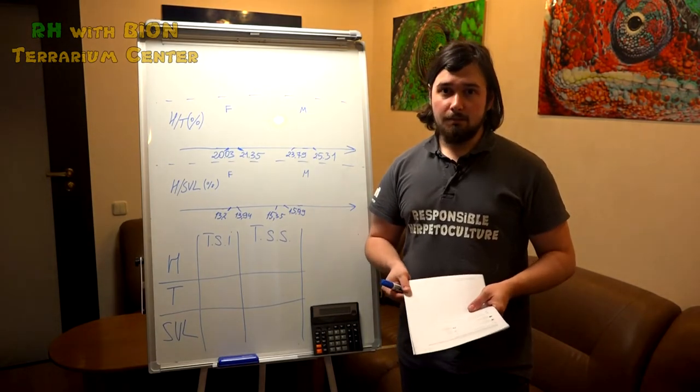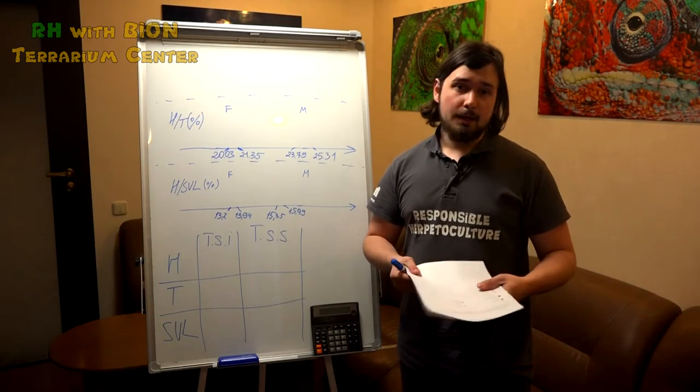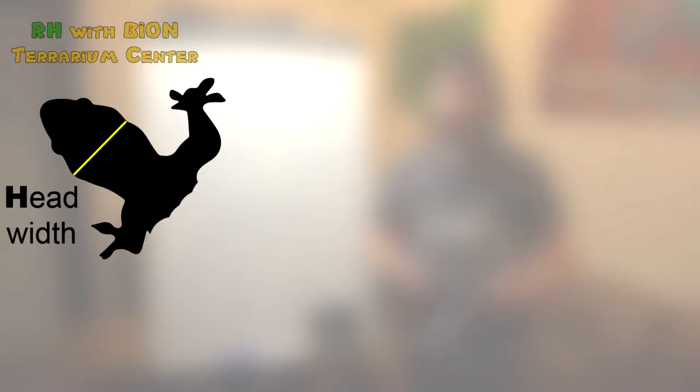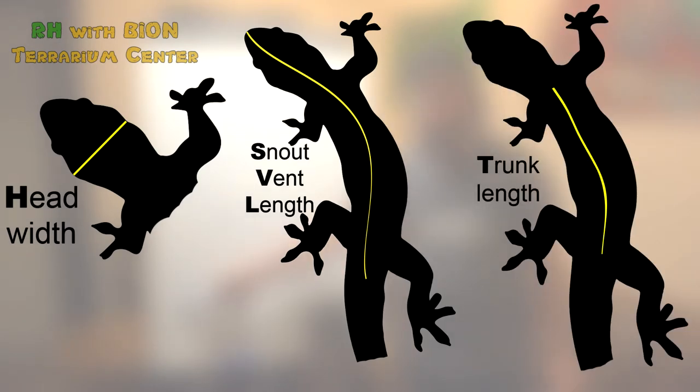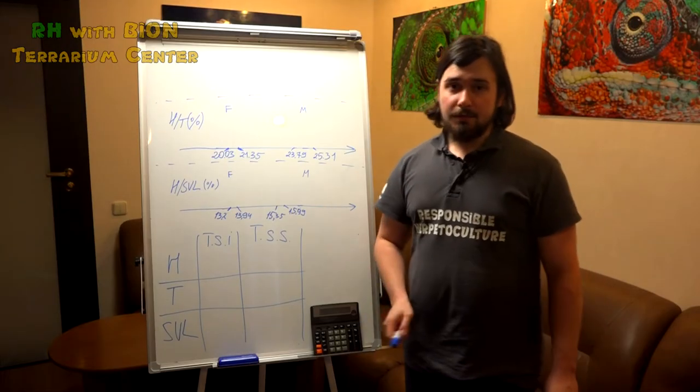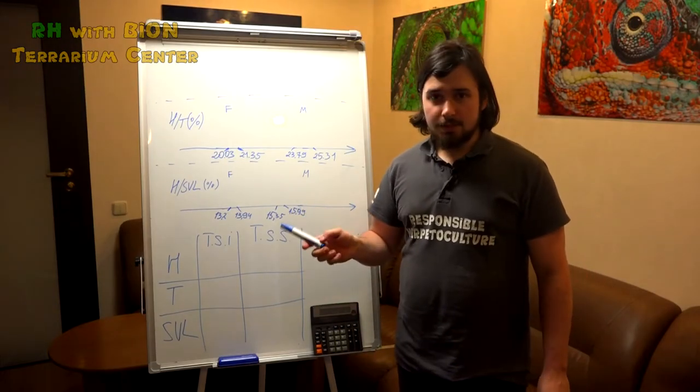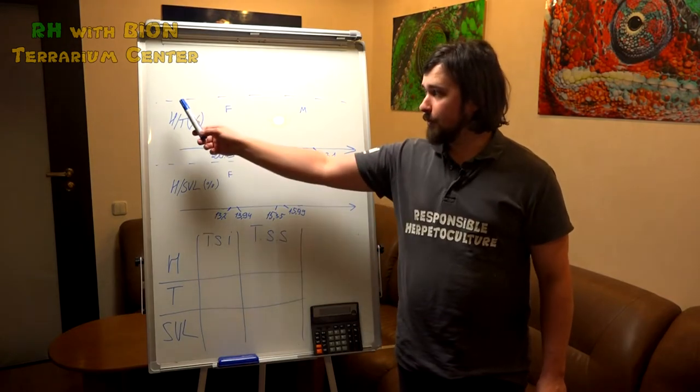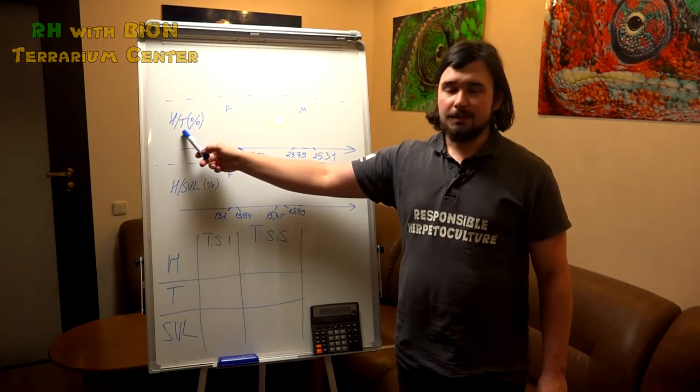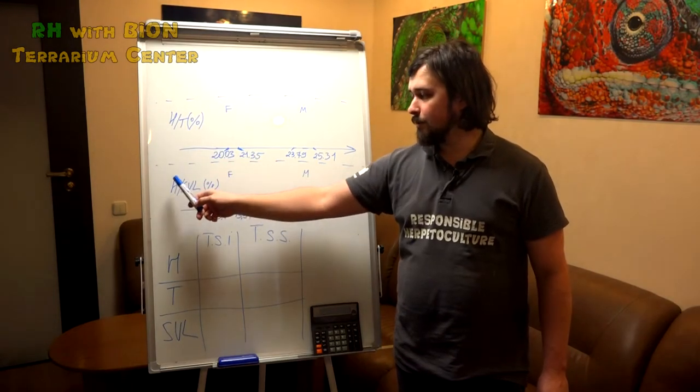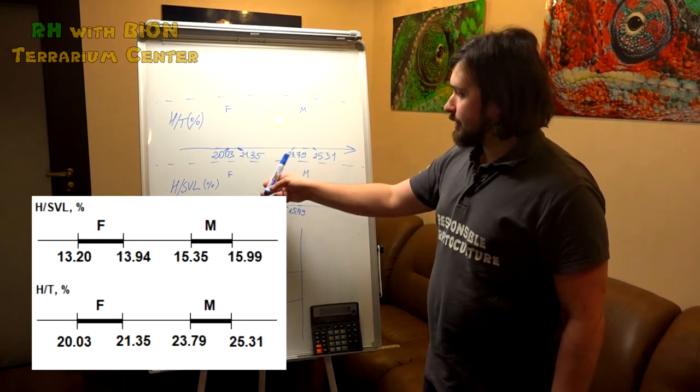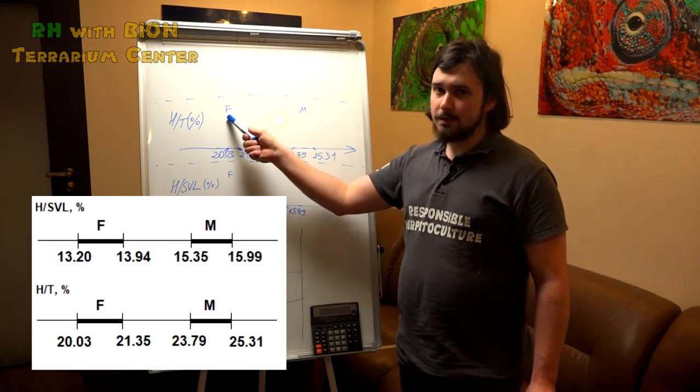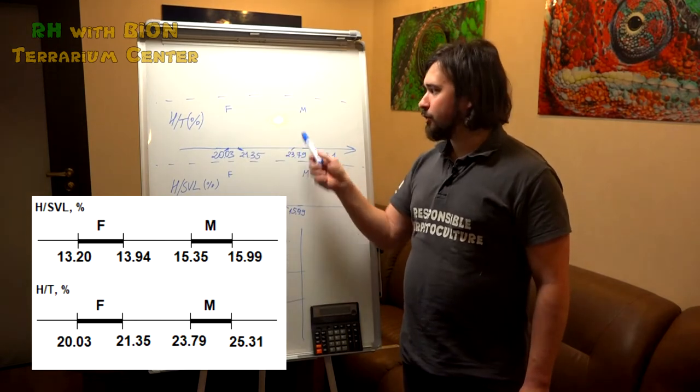And after that they made simple morphometrical analysis measuring the head widths and two lengths: snout vent lengths and lengths between fore and hind limbs. So just three parameters. It is very simple, it is very useful. And after that they measured good statistics. They measured proportions of head widths to distance between legs and head widths to snout vent lengths in percents. They figured out some indexes that are usual for females and some indexes that are usual for males.